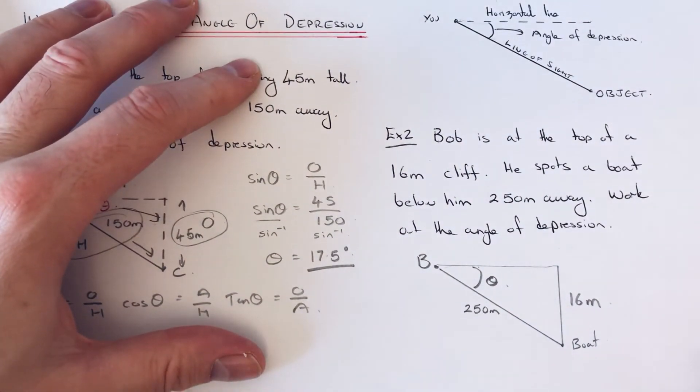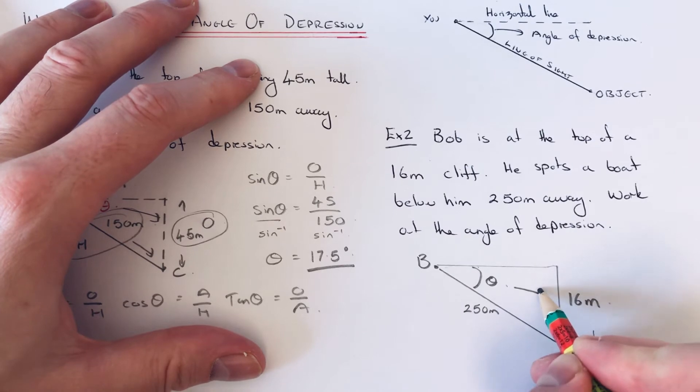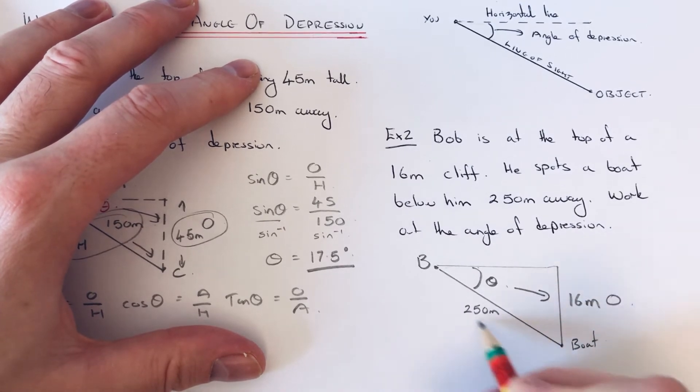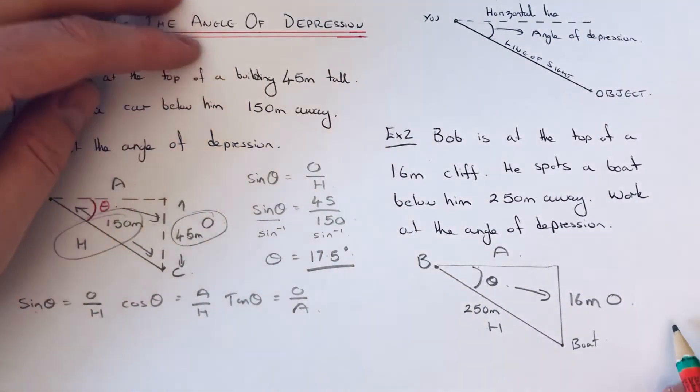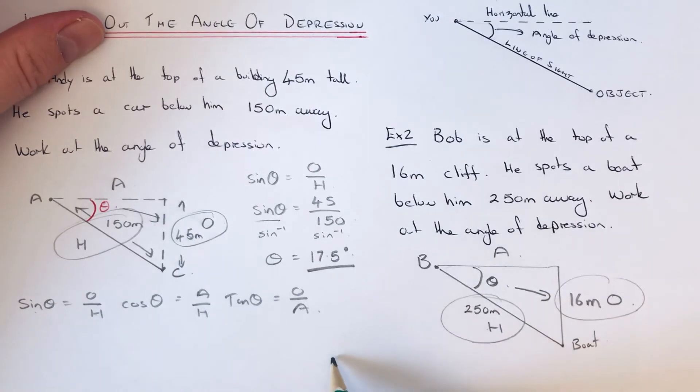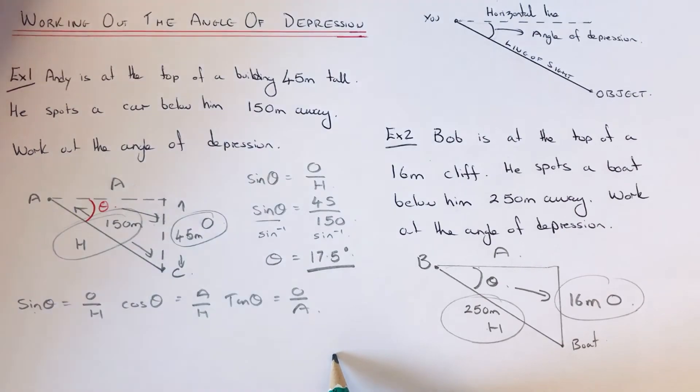So if you label up our triangle, that would be the opposite, that would be the hypotenuse, and our third side is the adjacent. So again, we've got the opposite and we've got the hypotenuse, exactly the same as the first example. So the formula we're going to be using is sin.